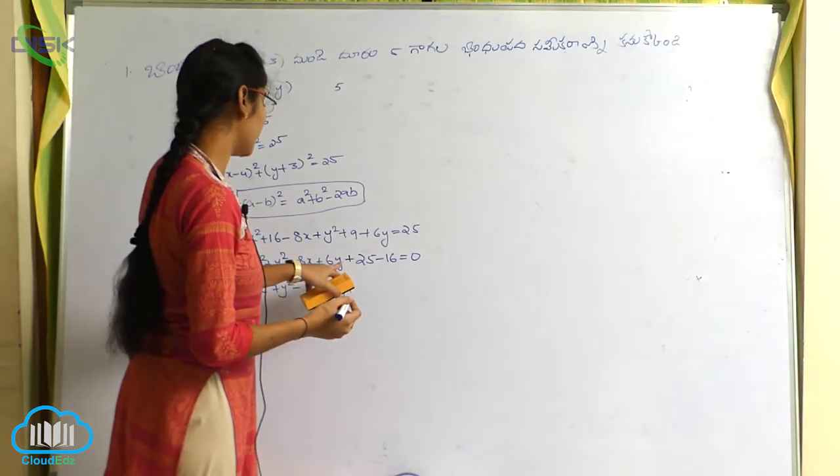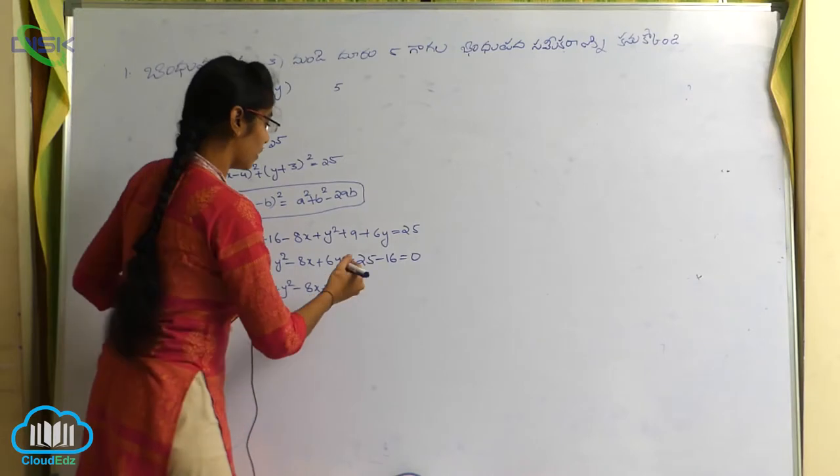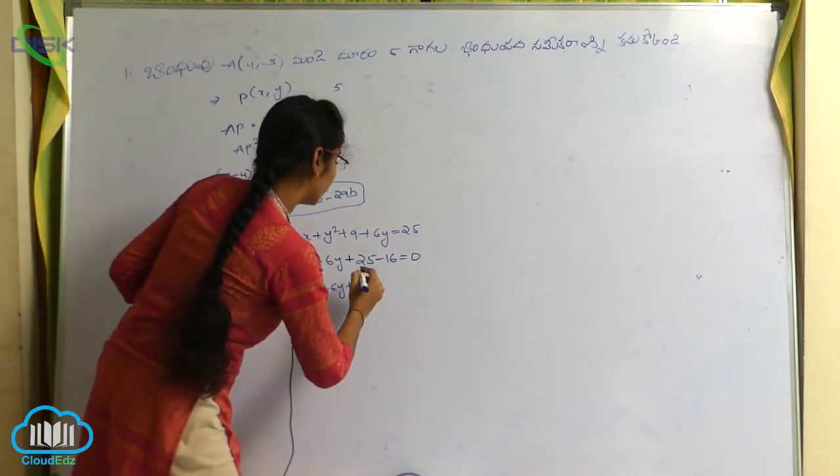x square plus y square minus 8x plus 6y plus 25 minus 16 is equals to 0. 25 minus 16, 25 minus 10, 15, 14.